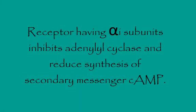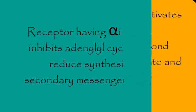Receptors having alpha-I subunits inhibit adenylyl cyclase and reduce synthesis of second messenger cAMP.